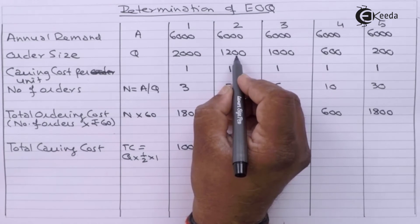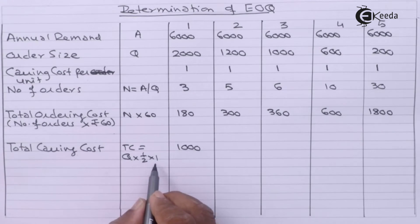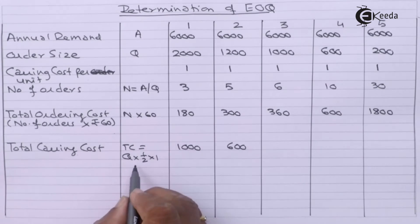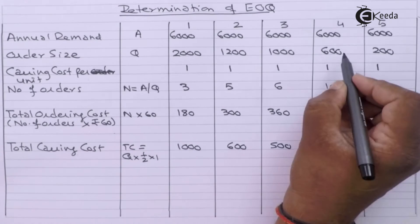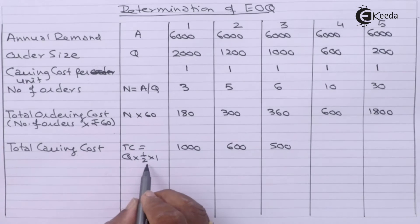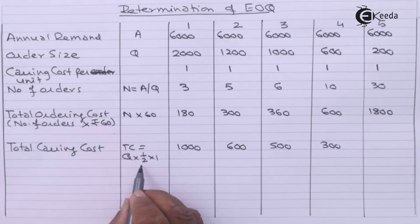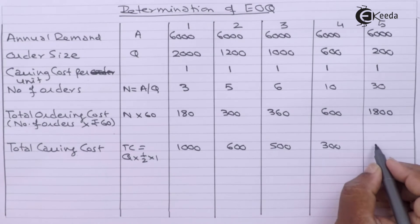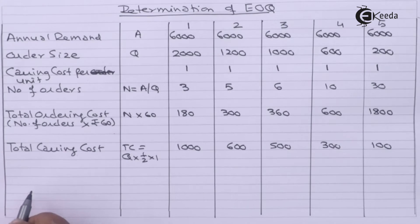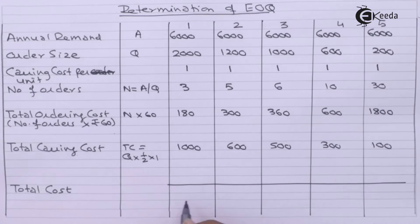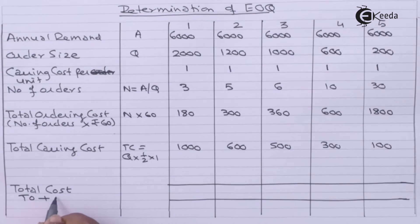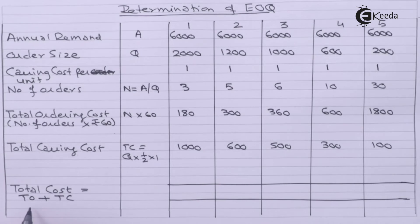For order size 1,200: 1,200 multiplied by half is 600, multiplied by Rs. 1 carrying cost. For order size 1,000: 1,000 divided by 2 gives 500, multiplied by Rs. 1. For order size 600: 600 divided by 2 gives 300, multiplied by Rs. 1. For order size 200: 200 divided by 2 gives 100, multiplied by Rs. 1. We can now calculate the total cost, which is total carrying cost plus total ordering cost.